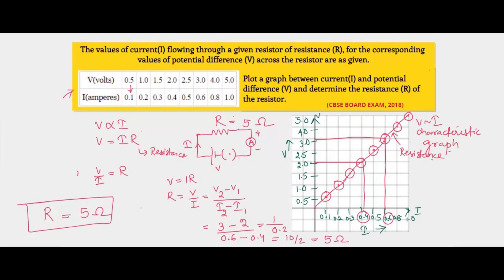This resistor value is 5 ohm and it will remain constant — you will get 5 ohm each time if you take any other two values of voltage and the corresponding values of current and divide them. Do try it for yourself. So the answer to this question is that the resistance is 5 ohm. The graph comes out to be a straight line, indicating it is an ohmic conductor. Let me know in the comment box if you get 5 ohm each time. Thanks for watching.